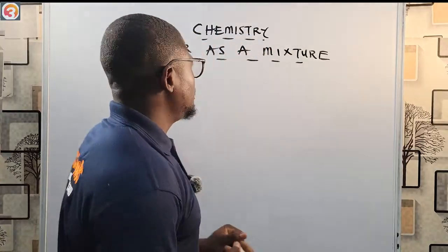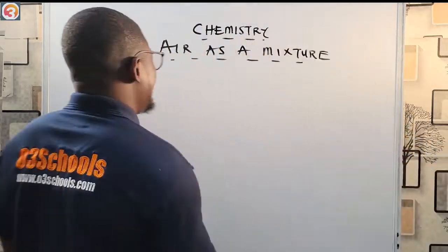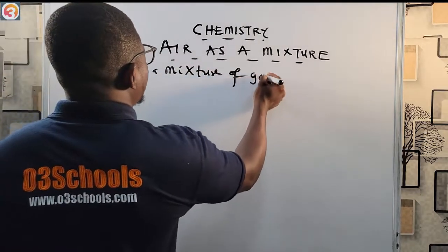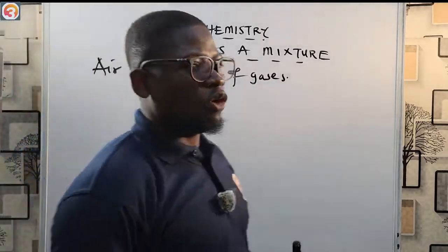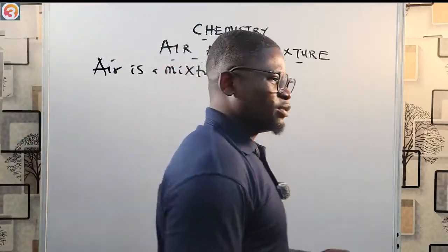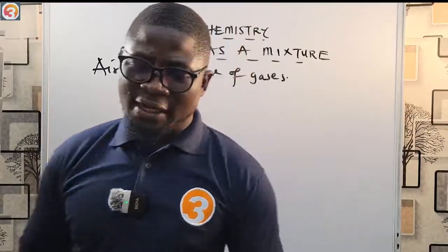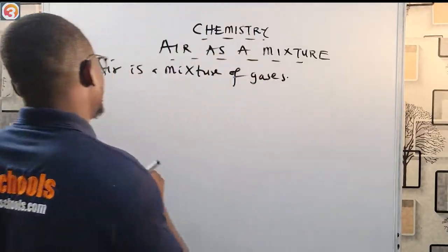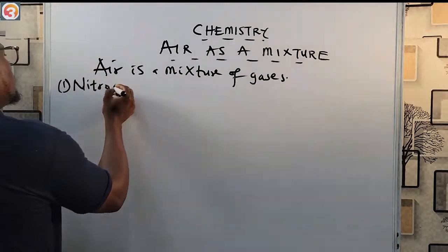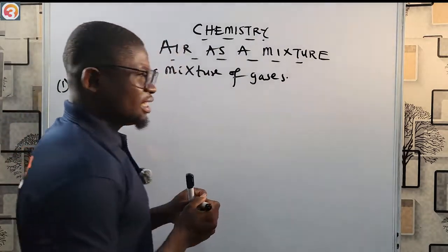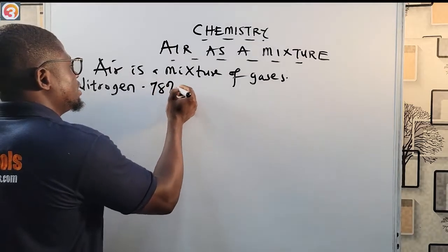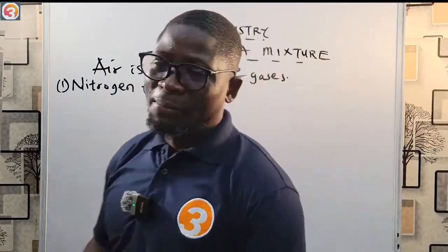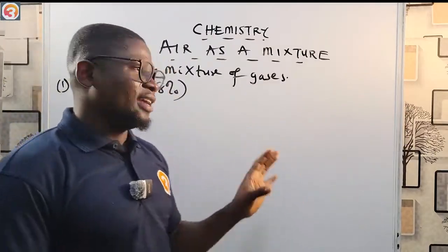Now into the topic: air as a mixture. Air is a mixture of gases. There are many components that make up air. Atmospheric air is made up of several components. Number one is nitrogen. Nitrogen contains 78% of the composition of air. By composition, the most abundant component of air is nitrogen — 78%.